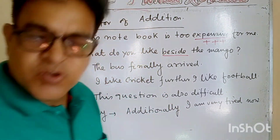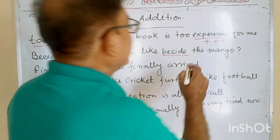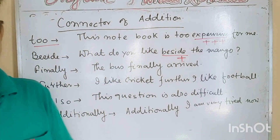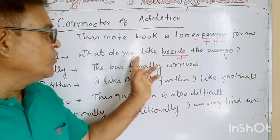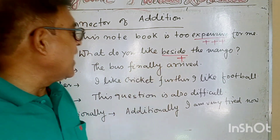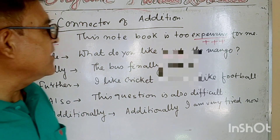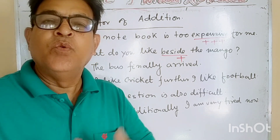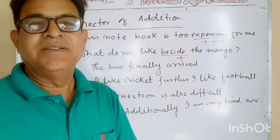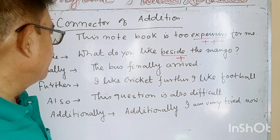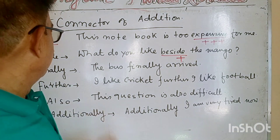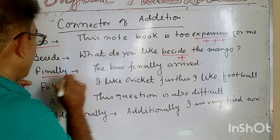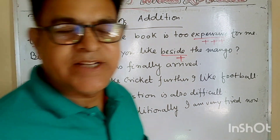So 'besides mango' means apart from mango — except that, what else do you like? We add to it. What do you like beside mango? I like mango — except that, which goods do you like? That is where we use 'in addition.'